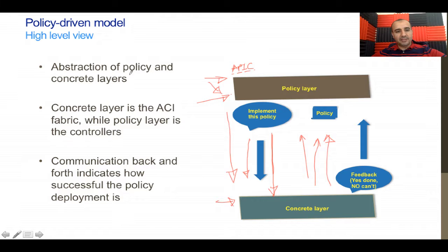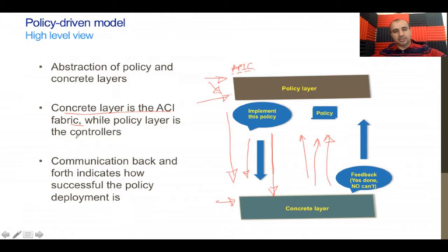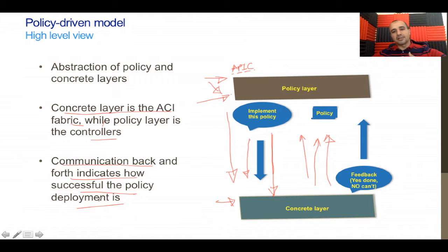The abstraction of policy and concrete layers: the concrete layer is the ACI fabric itself — the leaf switches, the actual switches in the fabric. The policy layer is the controllers — the Application Programmable Infrastructure Controller. Communication back and forth indicates how successful the policy deployment is, so there's always a continuation of that communication.